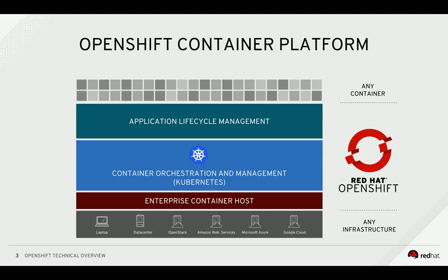Built on top of standard and proven technologies, OpenShift allows you to run and manage virtually any container on your choice of infrastructure. The stable and secure Red Hat Enterprise Linux provides the foundational container host. OpenShift then leverages integrated components from Kubernetes to automate deployments, scaling, and health management. OpenShift also adds developer and operations-centric tools to enable rapid application development, easy deployment and scaling, and long-term lifecycle maintenance for teams and applications.